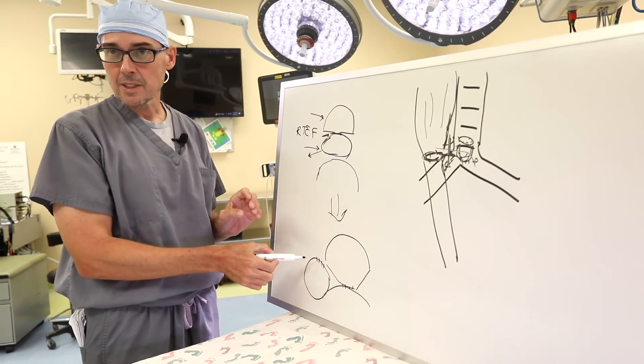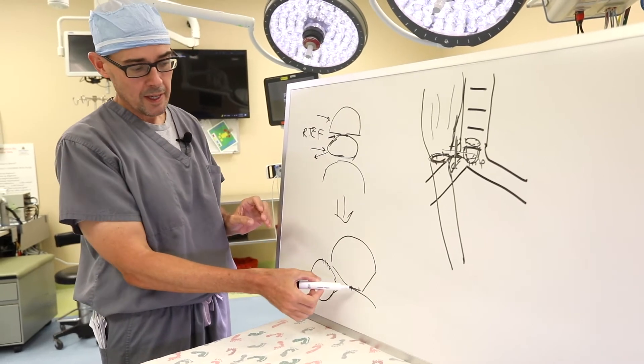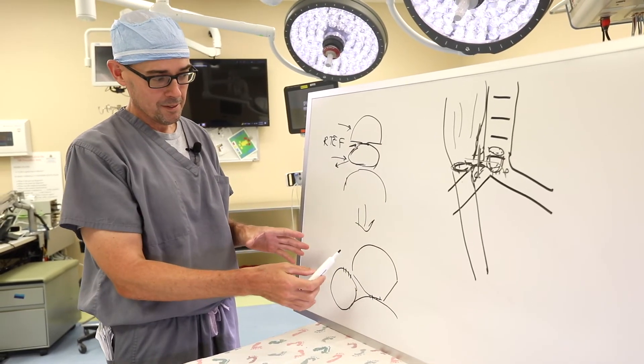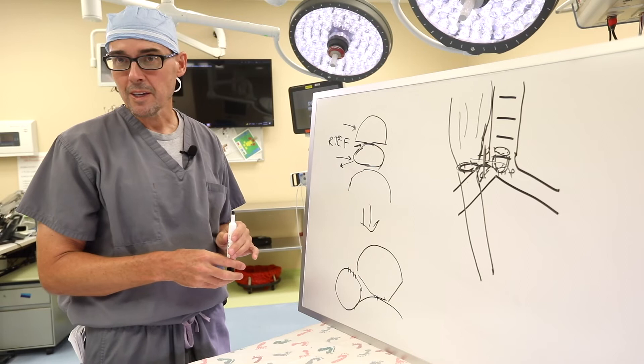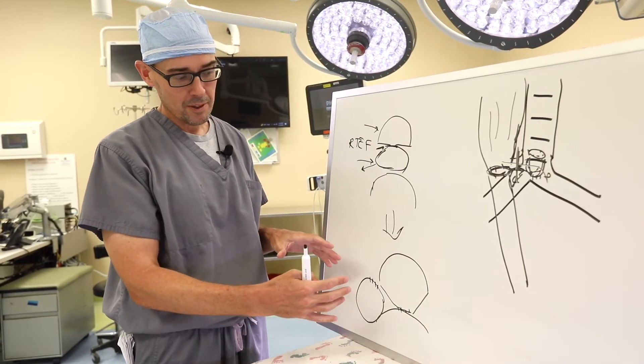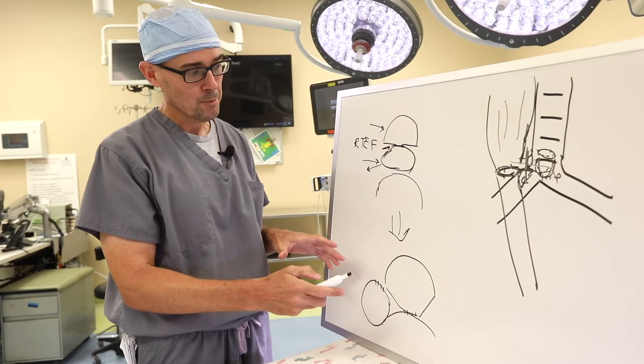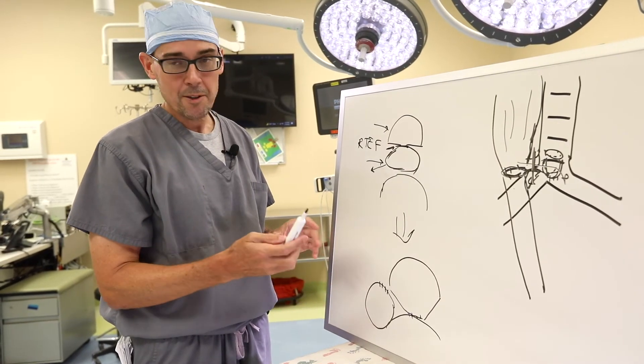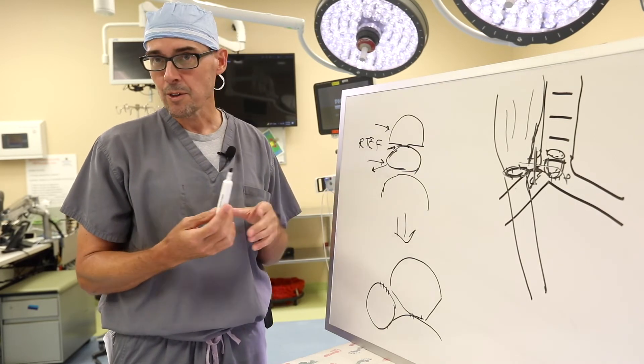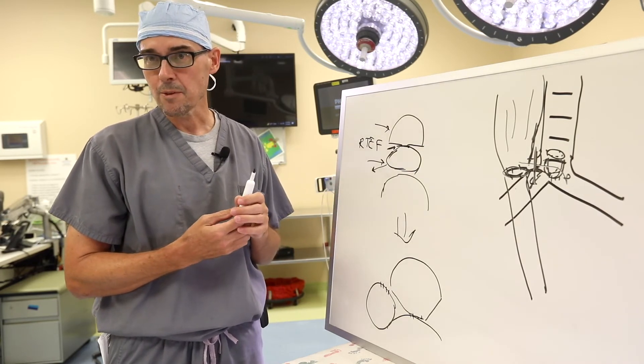That even if the esophagus leaks again, it can't get back into the trachea. This of course later revolutionized our thinking of how to treat tracheomalacia because this is how we developed the procedure of a posterior tracheopexy. And it turns out the overwhelming majority of babies that have a recurrent TEF also have severe tracheomalacia at that level.